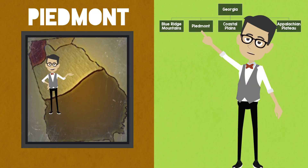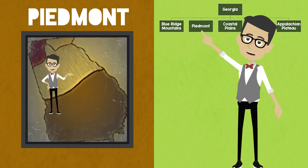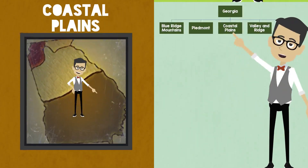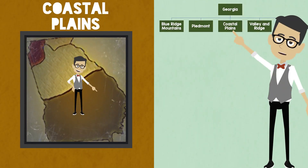Below the three regions in the north of Georgia is the Piedmont region, which has the most people living within it. South of the Piedmont is the coastal plain region of Georgia, which borders the Atlantic Ocean.